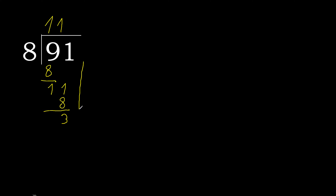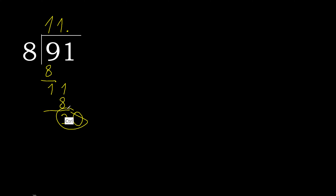Next, there is no number, therefore complete with 0 here with a decimal point. Bring down 0, making 30. 8 multiplied by 4 is greater, so multiply by 3 is 24. Subtract, remainder 6.